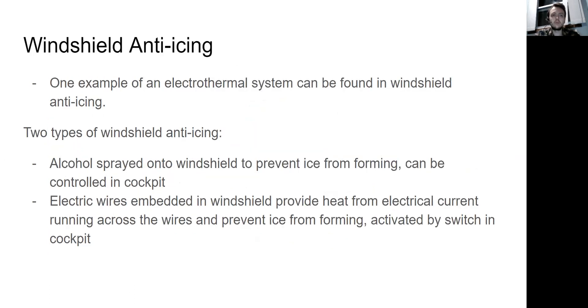So one example of an electrothermal system can be found in windshield anti-icing. Now there's two types of windshield anti-icing. There's one system where alcohol is sprayed onto the windshield to prevent ice from forming because the alcohol will not let water droplets bond. And then the other system is the electrothermal system where electric wires are embedded in the windshield that can provide heat from the electrical current running across them. And they prevent ice from forming as well and they can be activated by a switch in the cockpit.